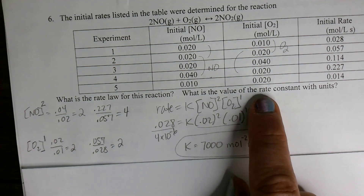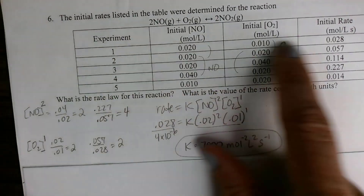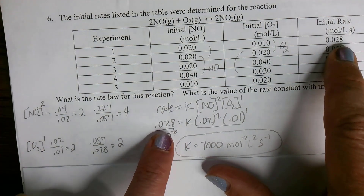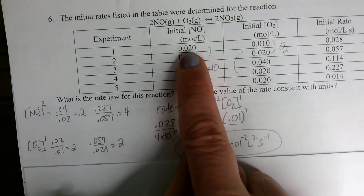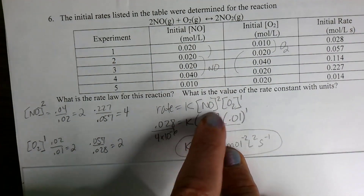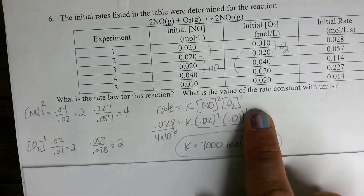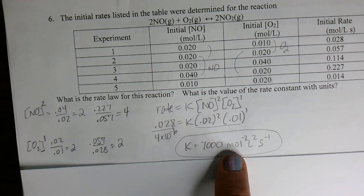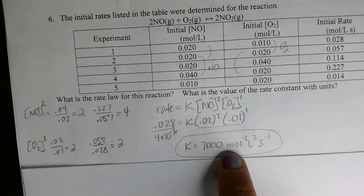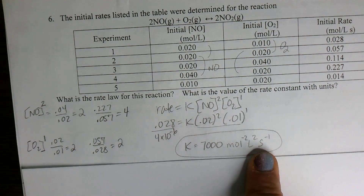To find the value of K with units, I'll use experiment 1: 0.028 equals K times [NO]² times [O₂]¹. Plugging in the concentrations should give K equals 7,000. The units would be mol⁻²·L²·s⁻¹, expressed as inverse moles squared, liters squared, seconds inverse.